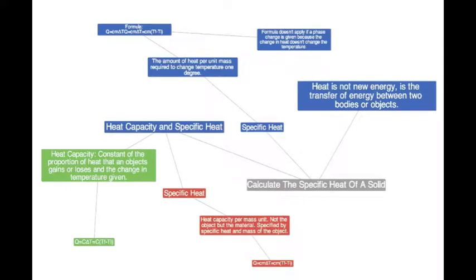Calculate the specific heat of the solid. Temperature is a measurement that indicates how hot or cold something is. Heat is not new energy, it is a transfer of energy between two bodies or objects. The specific heat is the heat capacity per mass unit, not the object but the material.